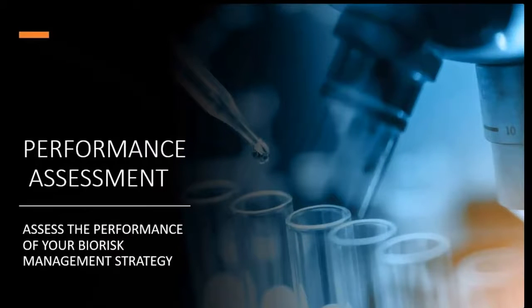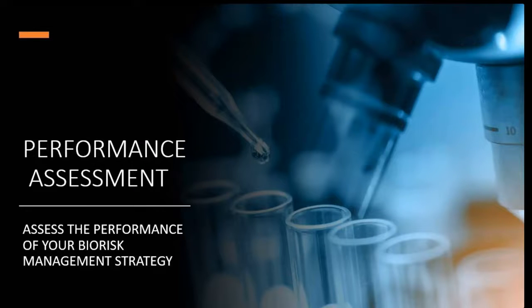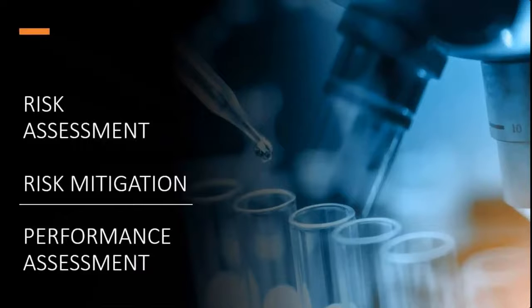We now move on to the third step in bio-risk management, which is performance assessment. Performance assessment involves auditing or looking back at your records to determine whether there was any breach of containment. If you did observe any breach in the form of an accident or incident, you must go back and look at your standard operating procedures and modify them accordingly. Documentation is critical to every biosafety operation — all documentation must be controlled and traced in order to identify potential breaches of containment. So that covers the key aspects of bio-risk management: risk assessment, risk mitigation by the application of the five controls, and performance assessment.